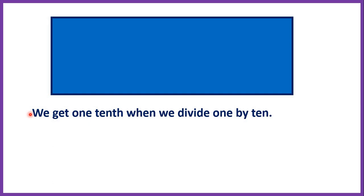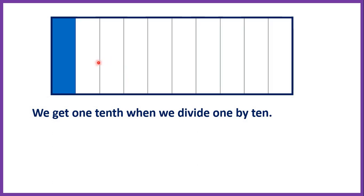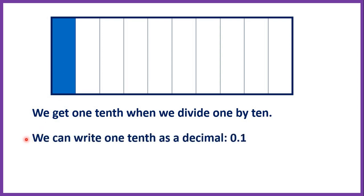We get 1 tenth when we divide 1 by 10. Here we have one big rectangle, and if we divide it into 10 pieces and keep only one of those pieces, we have 1 tenth. We can write 1 tenth as a decimal — that's 0.1 — so the digit after the decimal point is the tenths digit. So 1 divided by 10 equals 0.1, or 1 whole divided by 10 is 1 tenth.